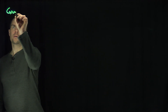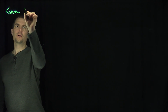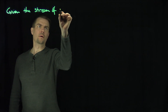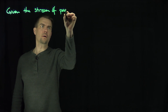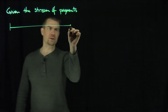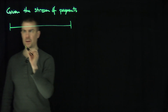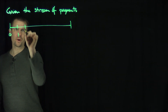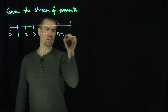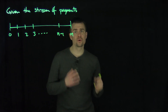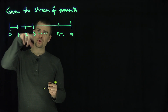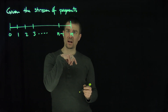Given the stream of payments according to this number line, I'm going to do this for annuities immediate. Here's time 0, time 1, time 2, time 3, time n minus 1, and time n. In a traditional annuity immediate, you would get $1 at time 1, $1 at time 2, $1 at time 3, all the way down to time n.